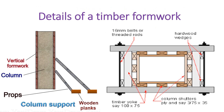Let's look at the details of the timber formwork. We have the vertical formwork, the columns, the props, and the wooden planks supporting the column. On the plan you can see the yokes and how they are running, the shutters or plywood used to form the column sides, and the wedges used to hold the yokes in place. Let's proceed and calculate the quantities of those components.